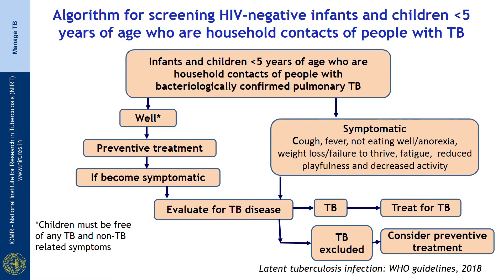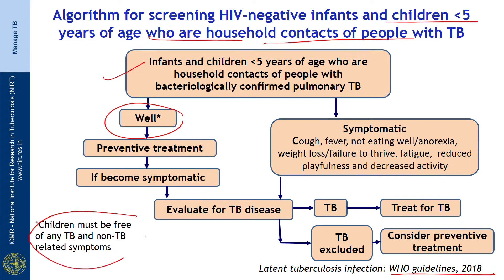The algorithm for screening HIV-negative infants and children less than 6 years of age who are household contacts of people with TB: according to WHO guidelines, if these children are well — meaning free of any TB and non-TB-related symptoms — preventive therapy can be given. If they become symptomatic, evaluate them for TB disease. If TB is confirmed, treat for TB; if TB is excluded, consider preventive treatment. If the child is symptomatic, evaluate for TB disease and manage accordingly depending on whether TB is present or excluded.